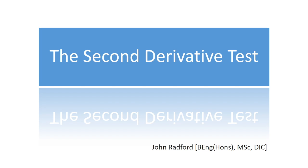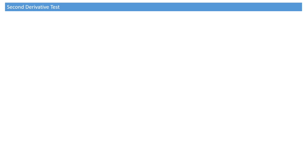In this video, we learn about the second derivative test. The second derivative test allows us to determine the nature of any stationary points along a curve's length.